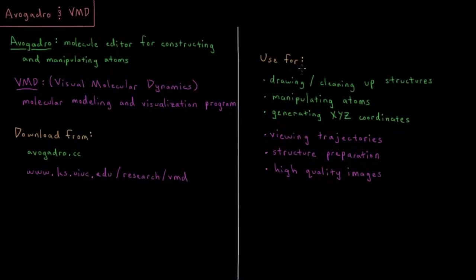For Avogadro, the types of things that I would typically use in the course of doing computational chemistry applications include initial drawing and cleaning up of structures. If I want a molecule like benzene or cyclohexane, I can draw it in Avogadro and get a good starting structure for the quantum programs that I'd be using.